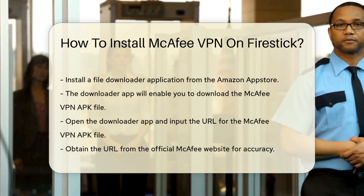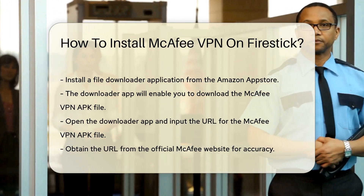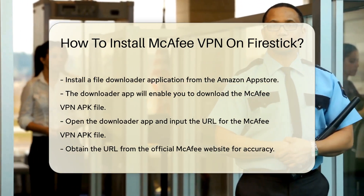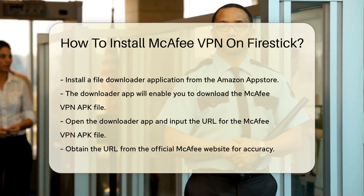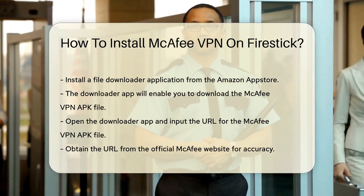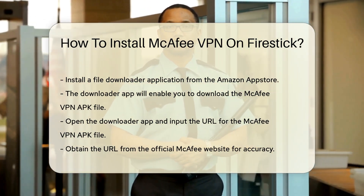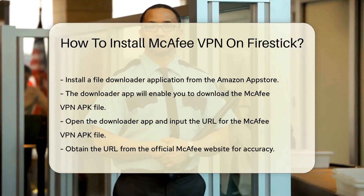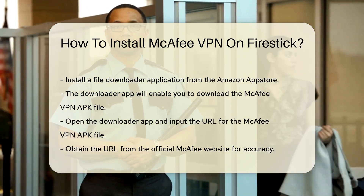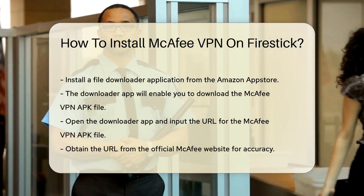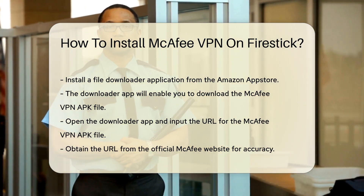Next, you will need a file downloader application. Search for and install a downloader app from the Amazon App Store. This app will allow you to download the McAfee VPN APK file directly onto your device.